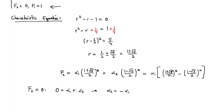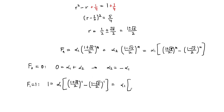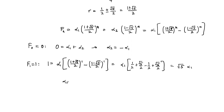Now we use the second initial condition, F_1 = 1, to solve for α_1. Plugging in n = 1: 1 = α_1 · [(1 + √5)/2 − (1 − √5)/2]. Working this out carefully, we get 1/2 + √5/2 − 1/2 + √5/2 = √5, so 1 = α_1 · √5, and therefore α_1 = 1/√5.